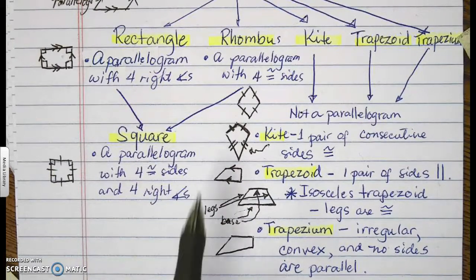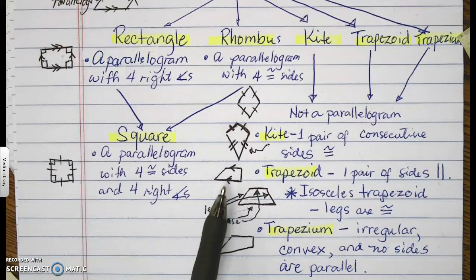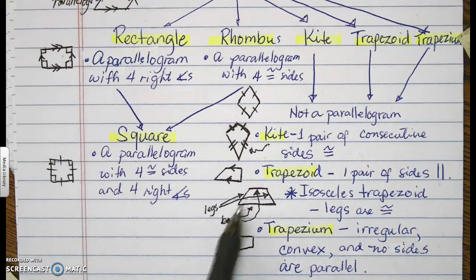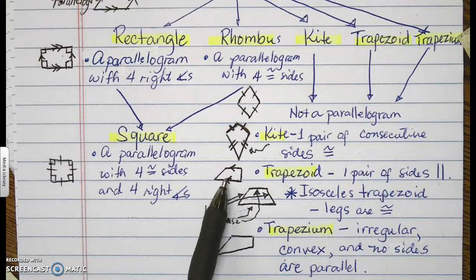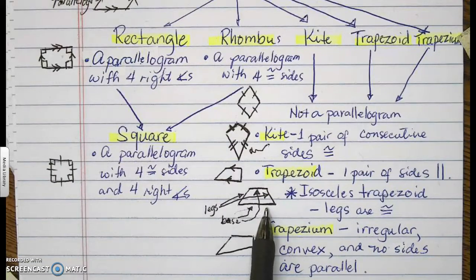Now, these are the two drawings or the two illustrations for a trapezoid. This one right here is a non-isosceles trapezoid. It's just the regular trapezoid. This is an isosceles trapezoid.